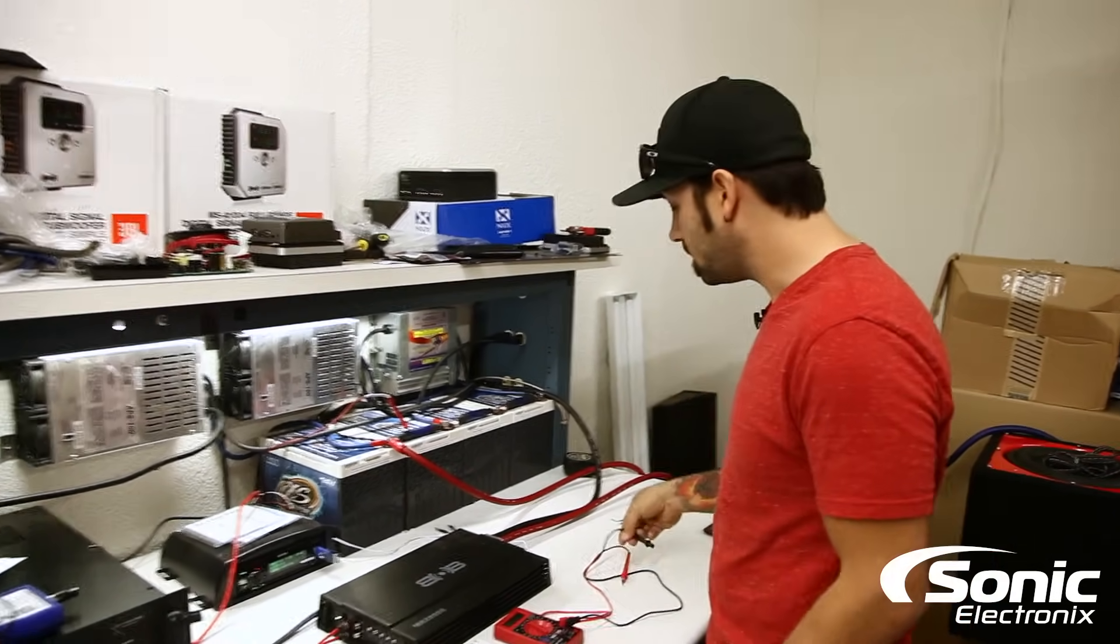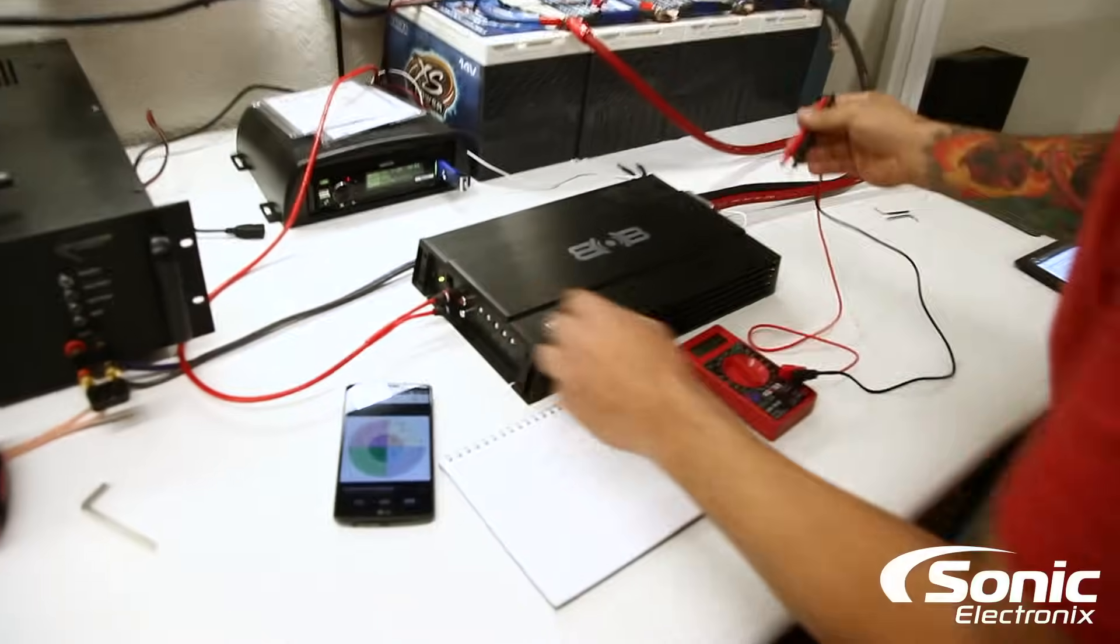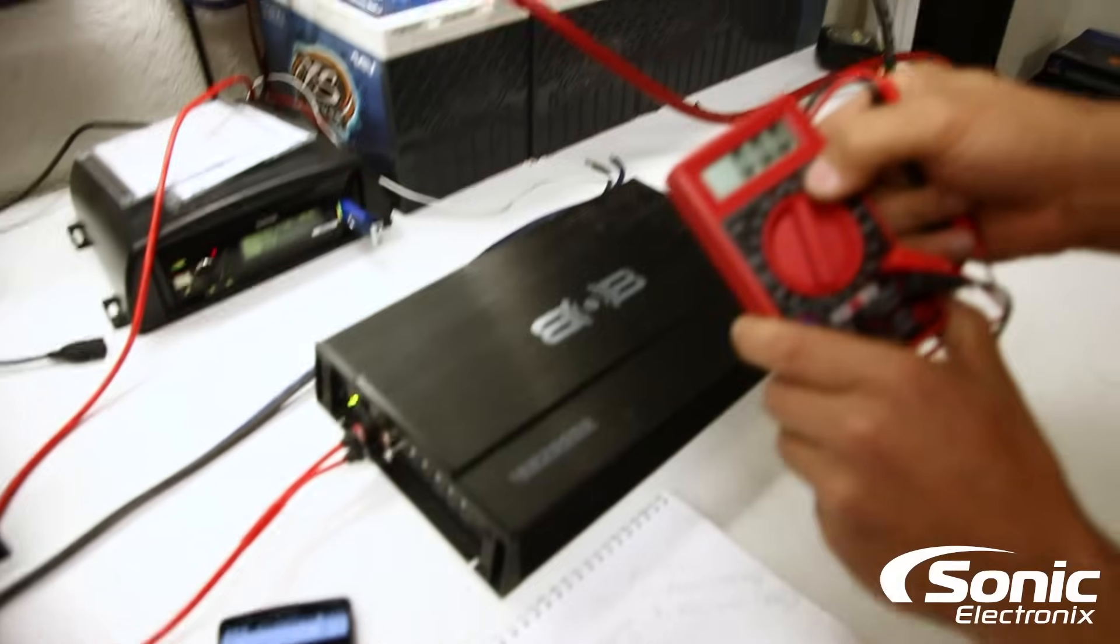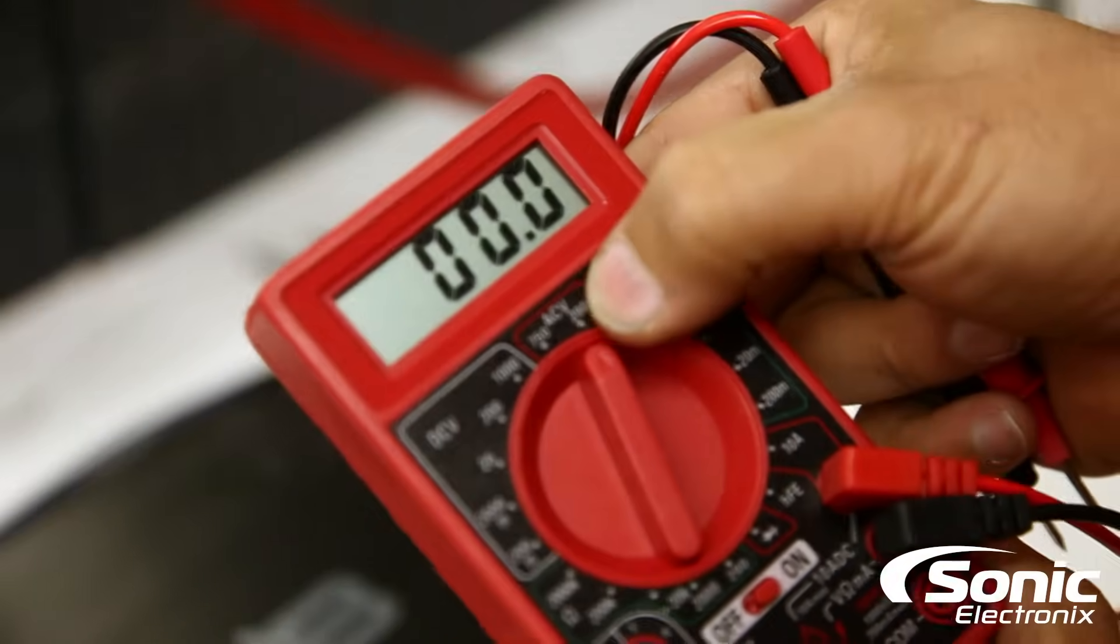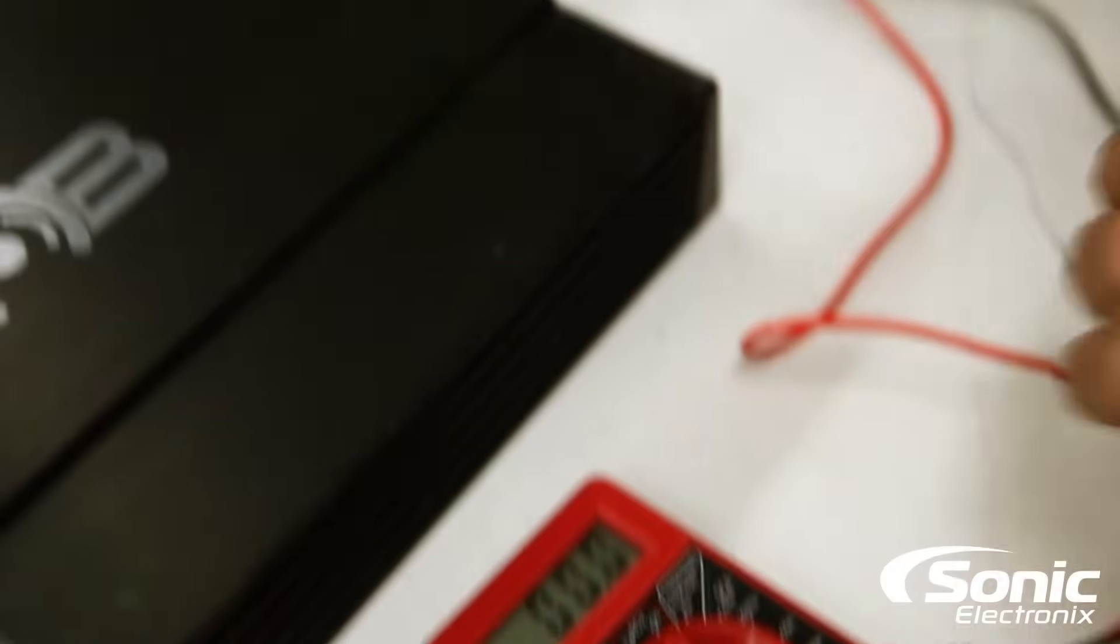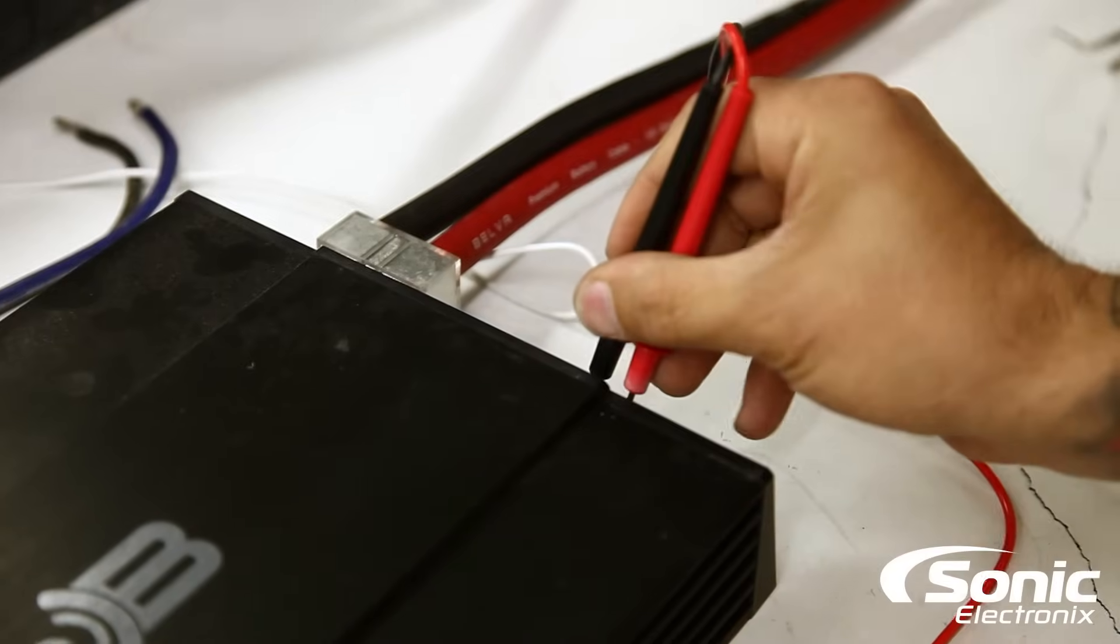So now that we've done that, we're gonna go ahead and set our multimeter to AC voltage—as you can see, ACV, AC voltage—and we're gonna take our two leads and we're gonna probe the output of the amplifier.